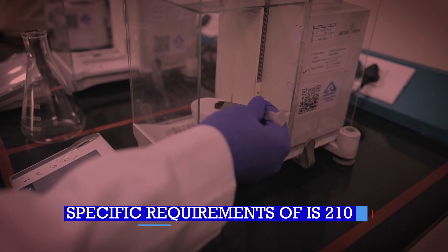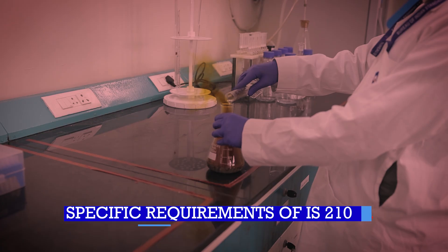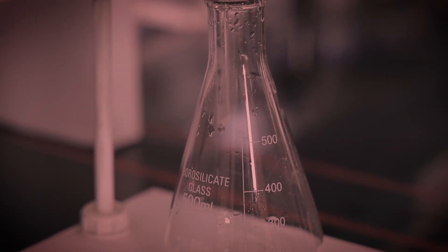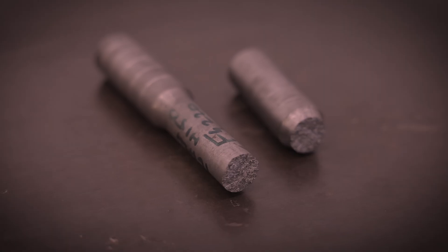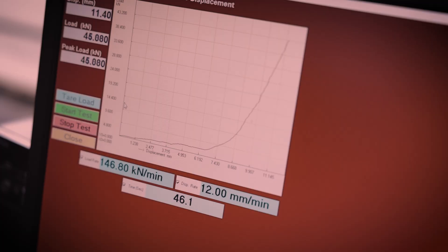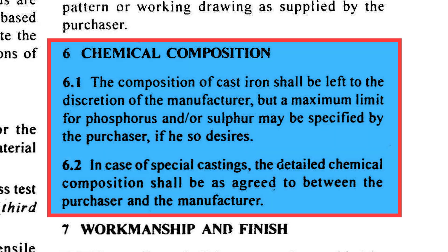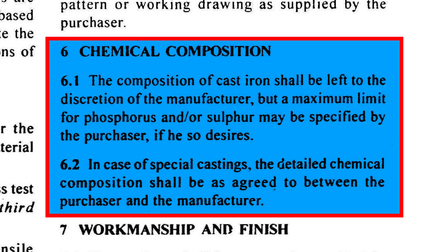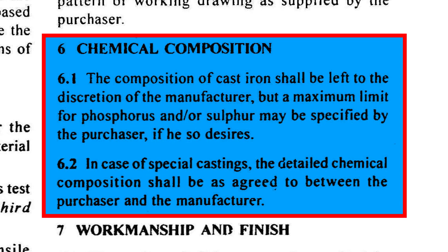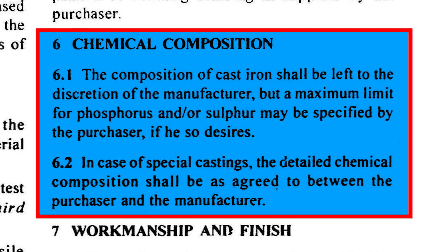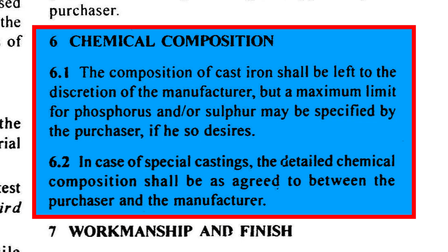Chemical composition analysis of Grey Cast Iron is crucial for ensuring the material's mechanical properties and performance. For example, carbon and silicon contribute to graphite flake formation, improving vibration damping and machinability. Accurate analysis helps meet quality standards and application requirements. The composition of cast iron is generally at the discretion of the manufacturer; however, the purchaser may specify maximum limits for phosphorus and/or sulfur depending on application requirements.